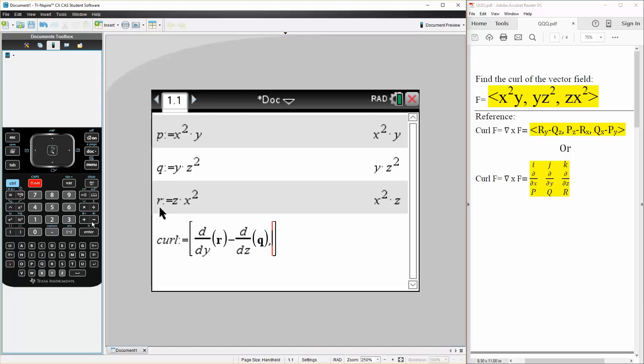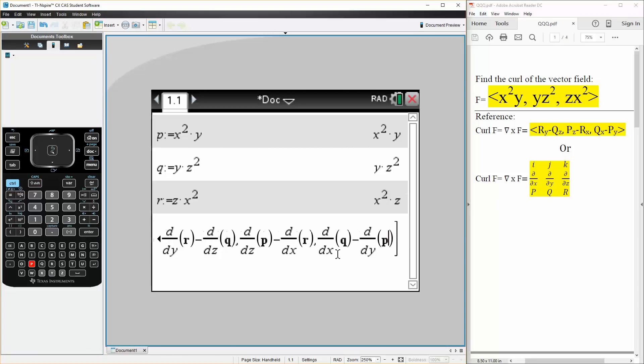We will do exact same thing, shift minus, we have z for p, minus, shift minus, we have x, shift minus, we have x for q, and one more, minus, shift minus, we have y for p.